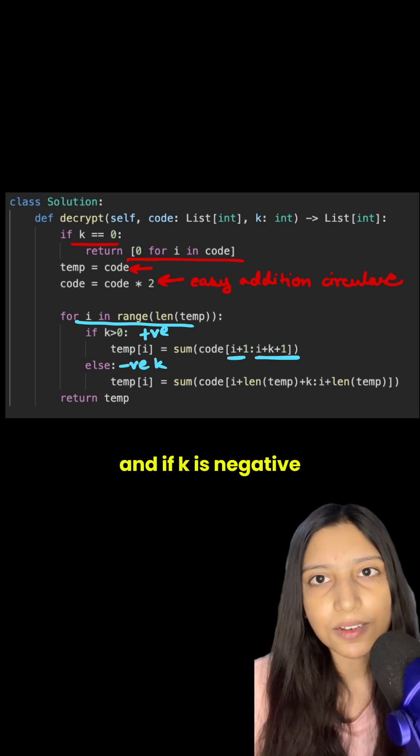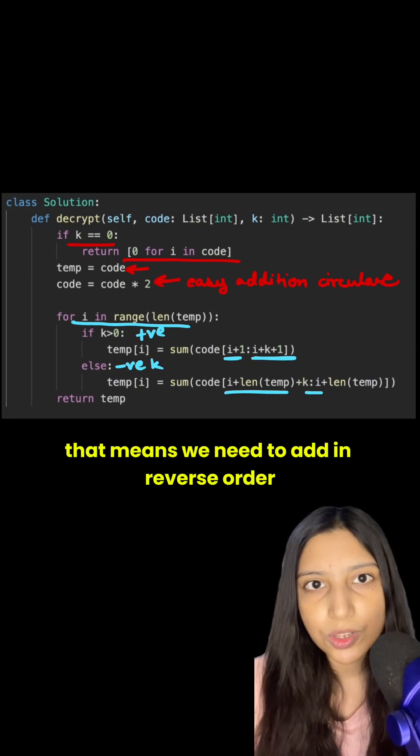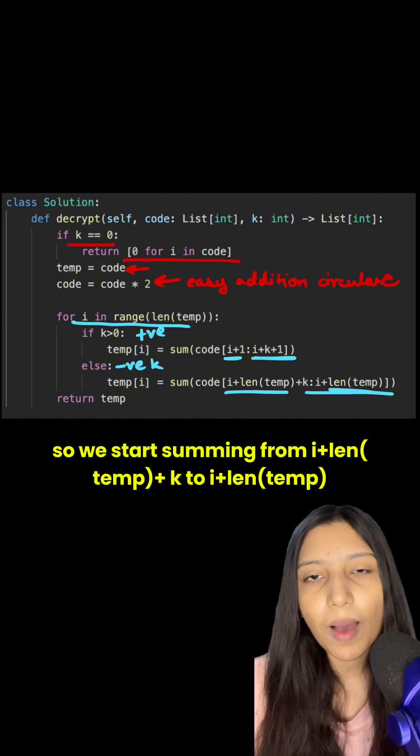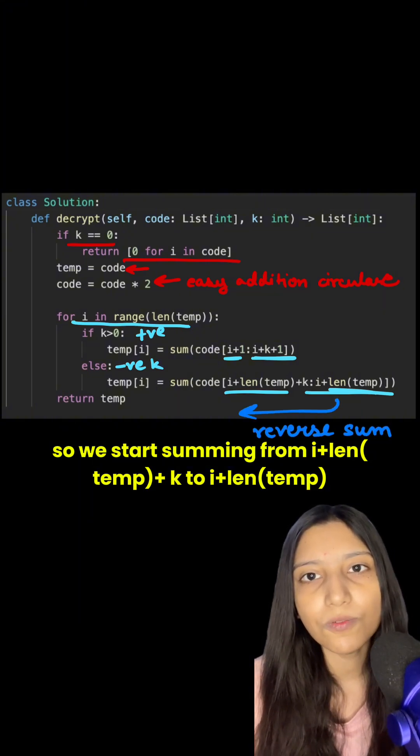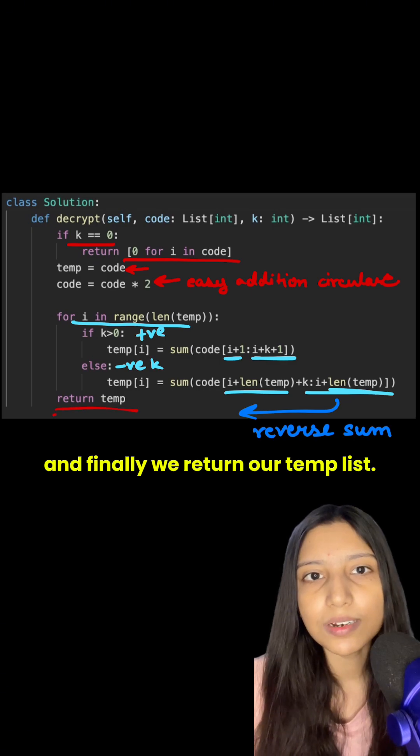And if k is negative, that means we need to add in reverse order. So we start summing from i plus length of temp plus k to i plus length of temp. And finally, we return our temp list.